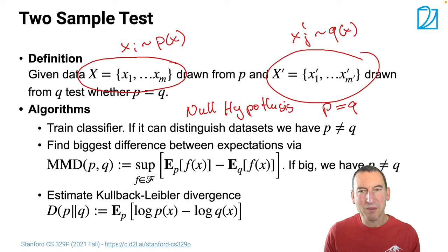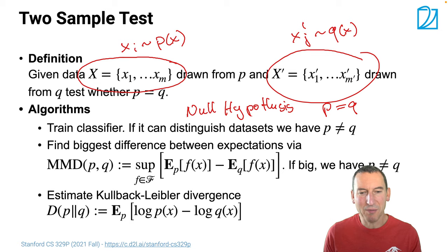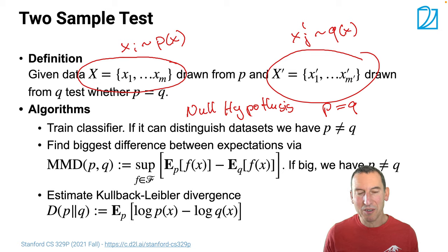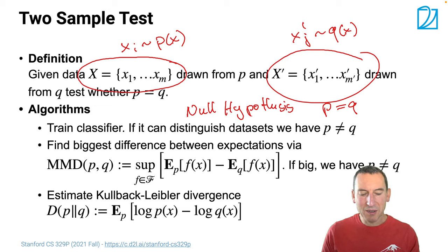There are a couple of algorithms for this. The simplest one we've already encountered: just train a classifier. If we can distinguish the datasets, then by definition p is not equal to q, because we've designed a function that outputs one for one class and minus one for the other. The alternative is something called maximum mean discrepancy, which we'll cover shortly.